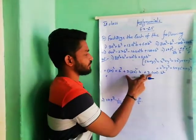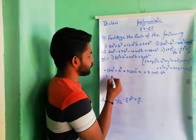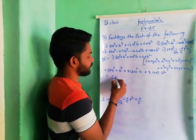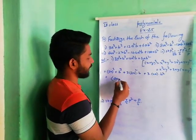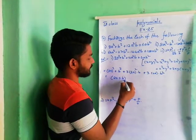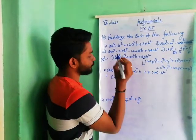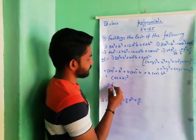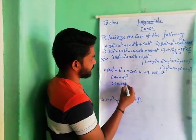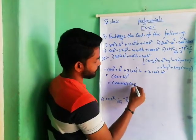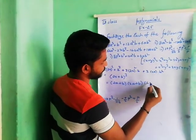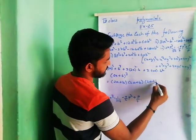This is equal to (x + y) whole cube. Here x value is 2a and y value is b, so the factorized form is (2a + b) into (2a + b) into (2a + b).